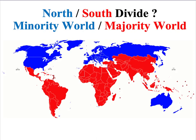An interesting geographical factor when looking at global inequalities is the north-south divide. Most of the rich countries in the world are in the north — shown in blue — with a few exceptions like Australia and New Zealand. These richer countries are sometimes also referred to as the minority world, referring to their share of world population: only about 20% of the world's population live in these countries.